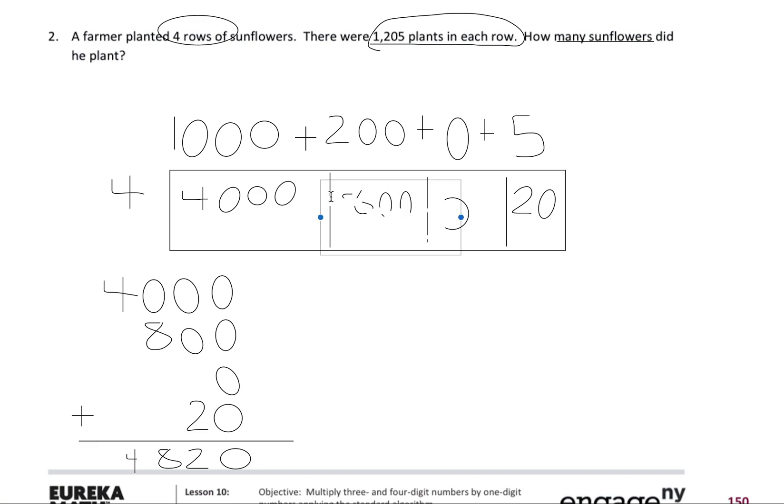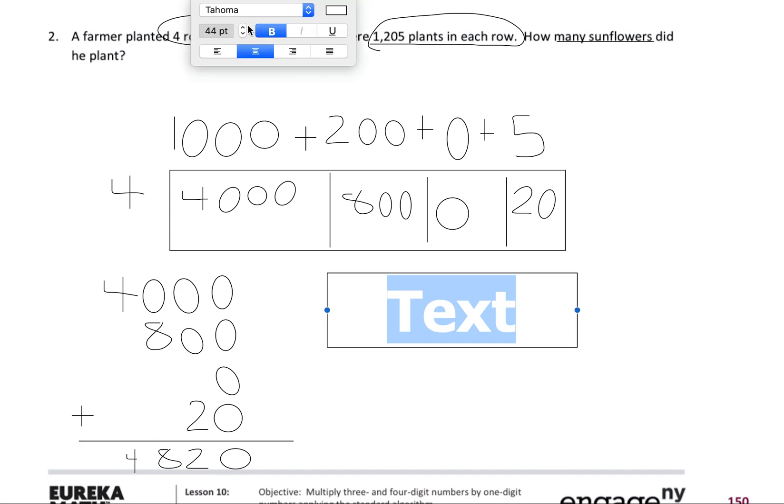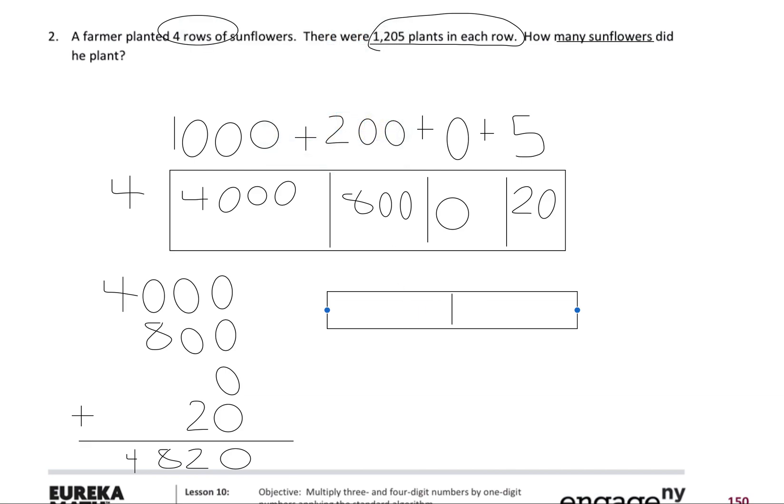So I'm looking back at my question: how many sunflowers did he plant? So I can start off by saying 'He planted,' and this is where I'm going to insert my answer: four thousand eight hundred twenty sunflowers.